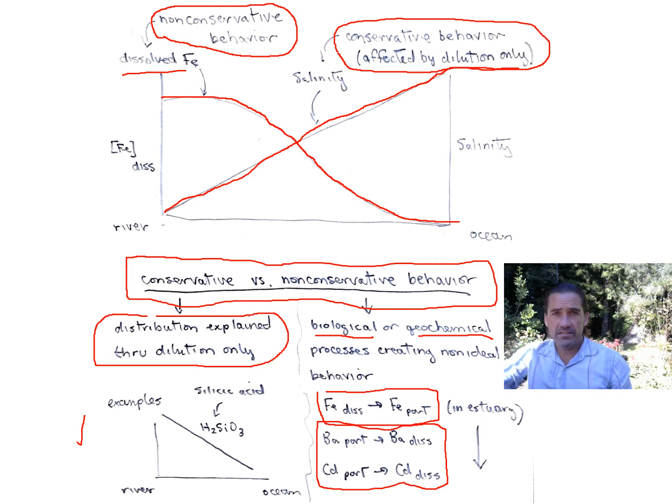Before I go to the last slide, let's just look at silicic acid, which we talked about previously. Silicic acid through the estuary behaves conservatively, different than salinity because its concentration is actually high in the river. But as it goes through the estuary, it gets diluted with seawater and its concentration lowers by dilution only.